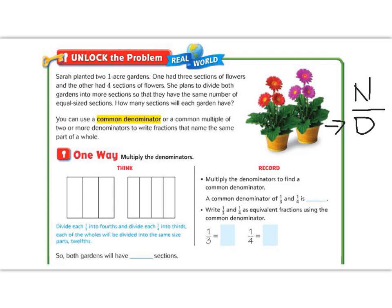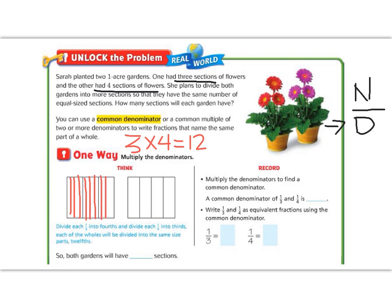Looking at the first method: we have one garden split into three sections, and one garden split into four sections, but we want to make them all the same. So one way to do that is to multiply them — three times four is twelve. That means both numbers can become twelve. I can split my thirds into four parts each, giving me twelve equal pieces. I could also split my fourths into three parts each, and now I have twelve over here as well.